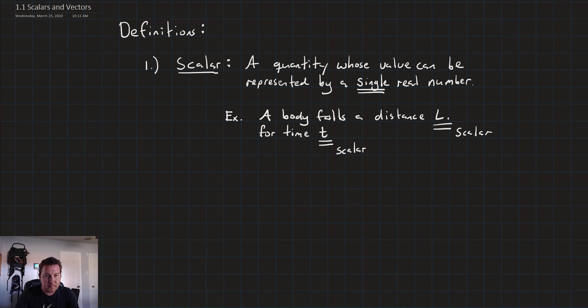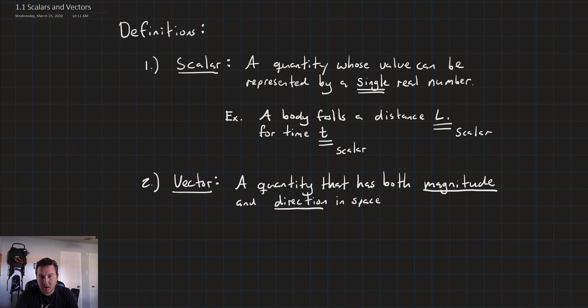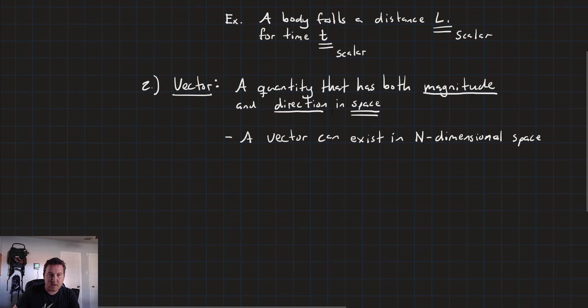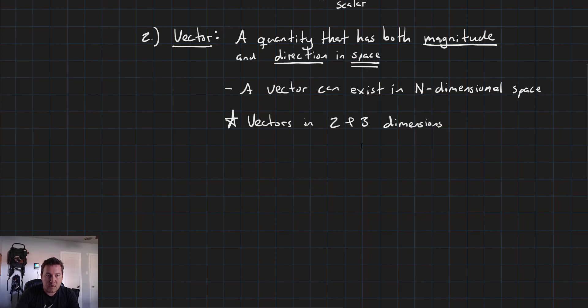Next up is a vector. A vector is a quantity that has both magnitude and direction in space. So the important things here are magnitude and direction, and also space. A vector can exist in N-dimensional space, although in this class we will primarily deal with vectors in two and three dimensions.